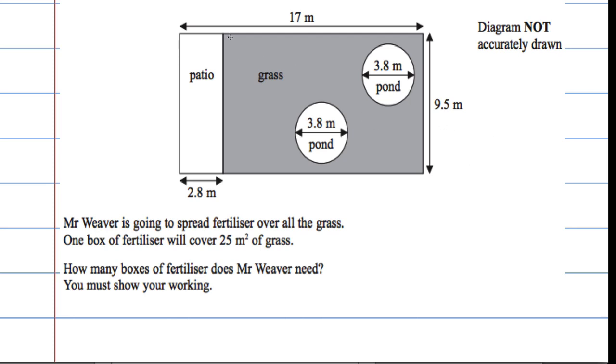Okay, essentially what we need to do is we need to work out the area of the grass. And the area of the grass is a rectangular shape with two circular shapes taken away.